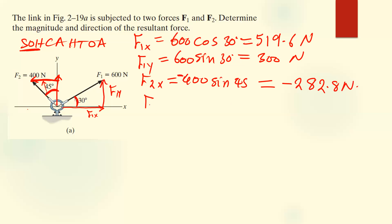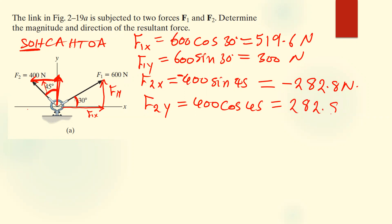F2 in the Y: the Y component is pointing towards the positive Y axis, so we leave it positive. The Y component is adjacent to the 45-degree angle, so we use cosine. F2y = 400 cos 45, which also gives us 282.8 Newtons.